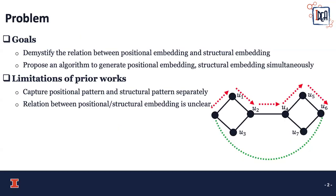The goal of this paper is to study the relationship between Positional Embedding and Structure Embedding in Network Representation Learning, and we want to propose an algorithm to generate both simultaneously. Existing works have limitations — for example, they can only capture the Positional Pattern or the Structure Pattern separately, and the relation between them is unclear.